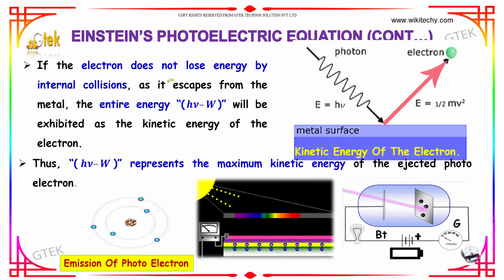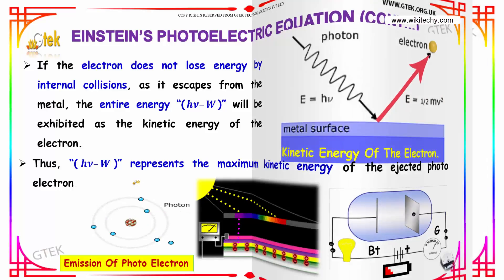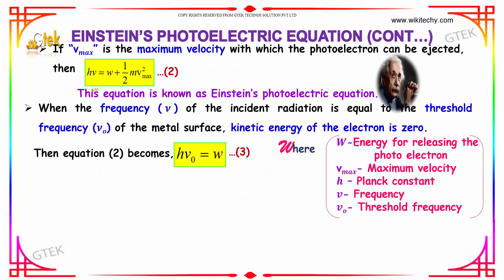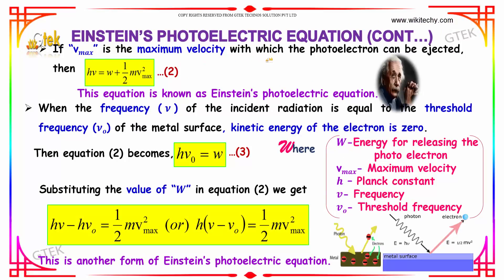If the electron does not lose energy by internal collisions as it escapes from the metal, the entire energy h nu minus W will be exhibited as the kinetic energy of the electron. So, h nu minus W represents the maximum kinetic energy of the ejected photoelectron.